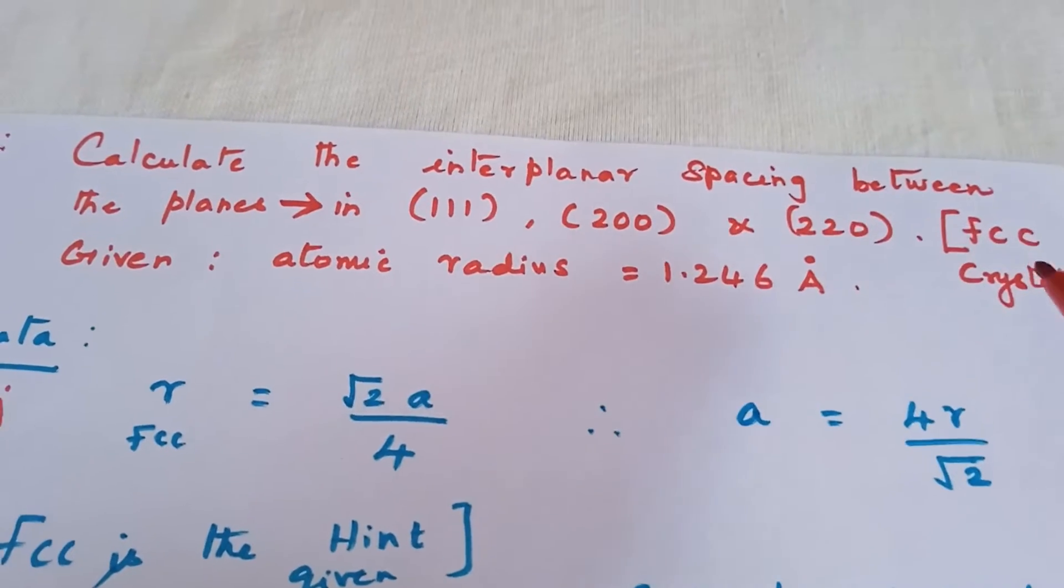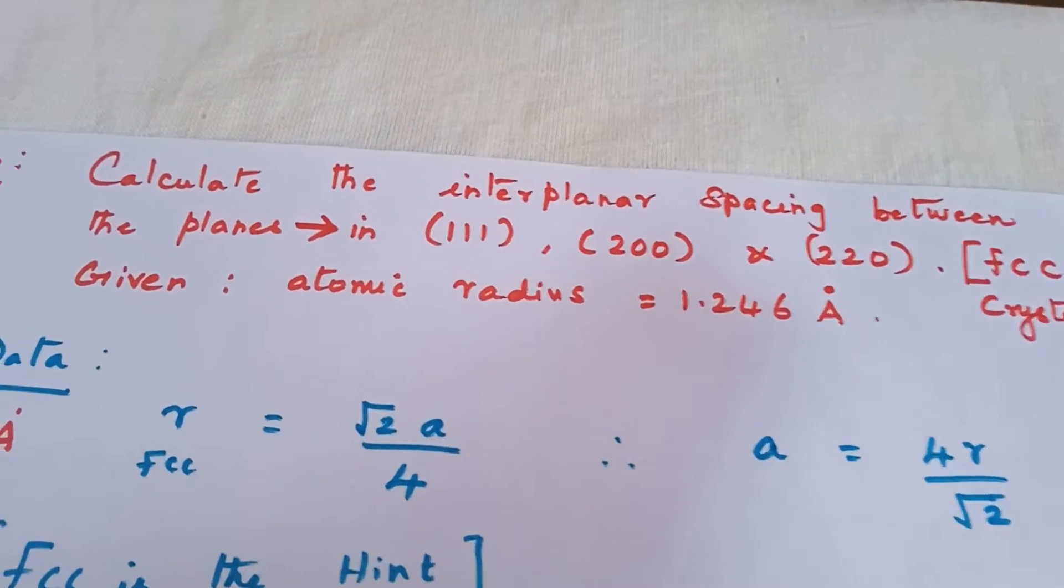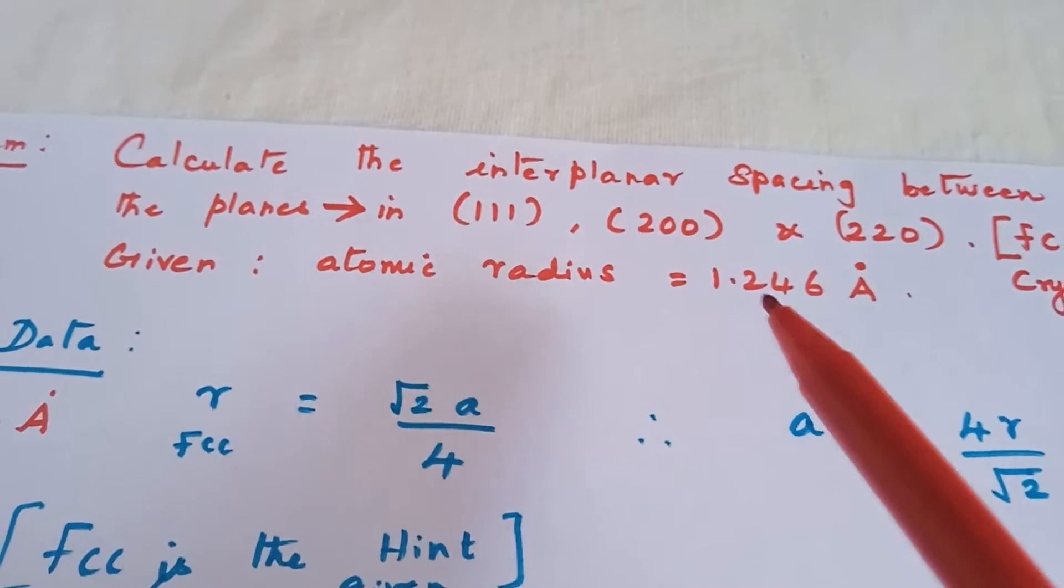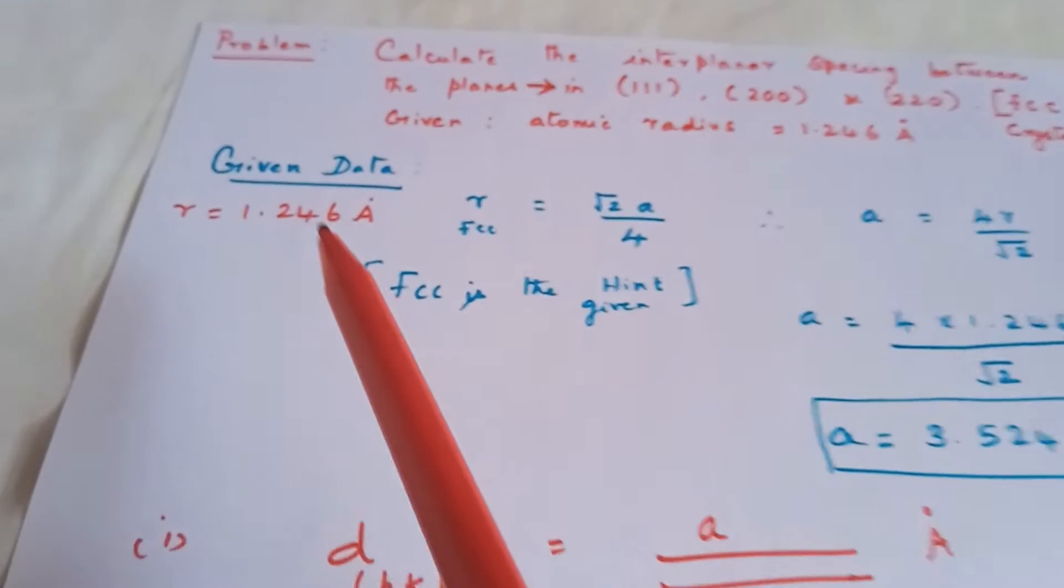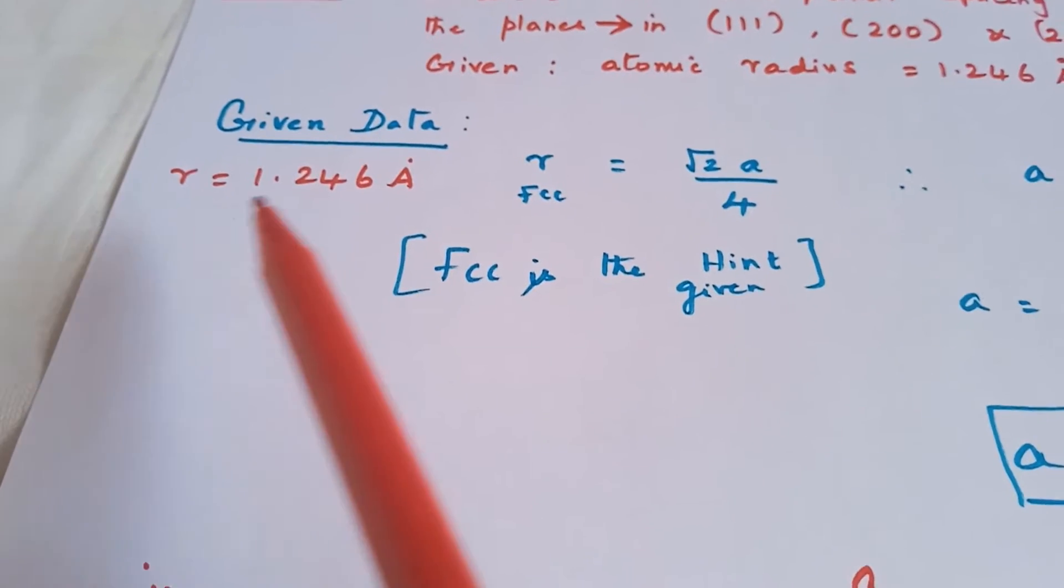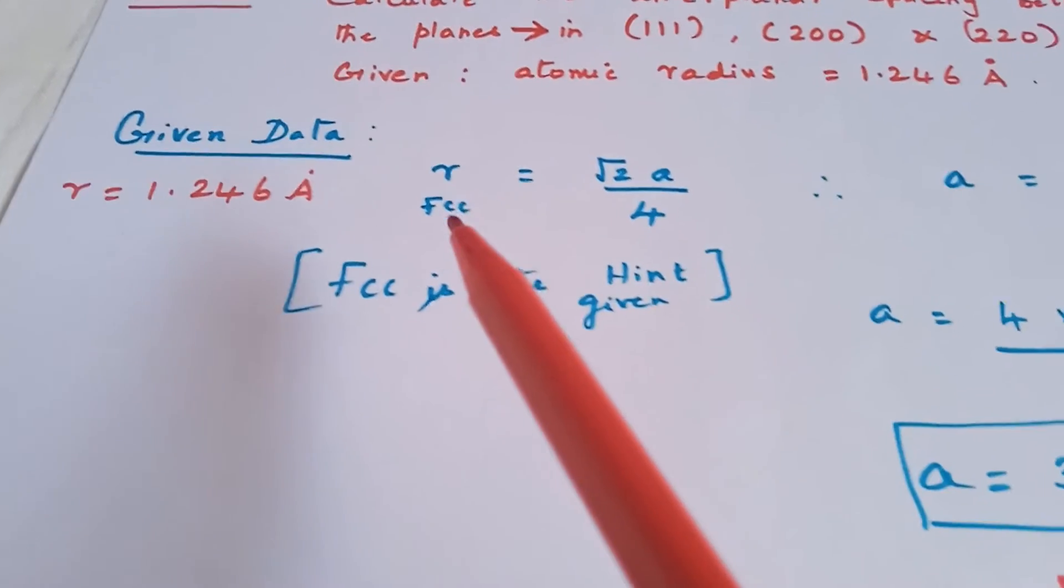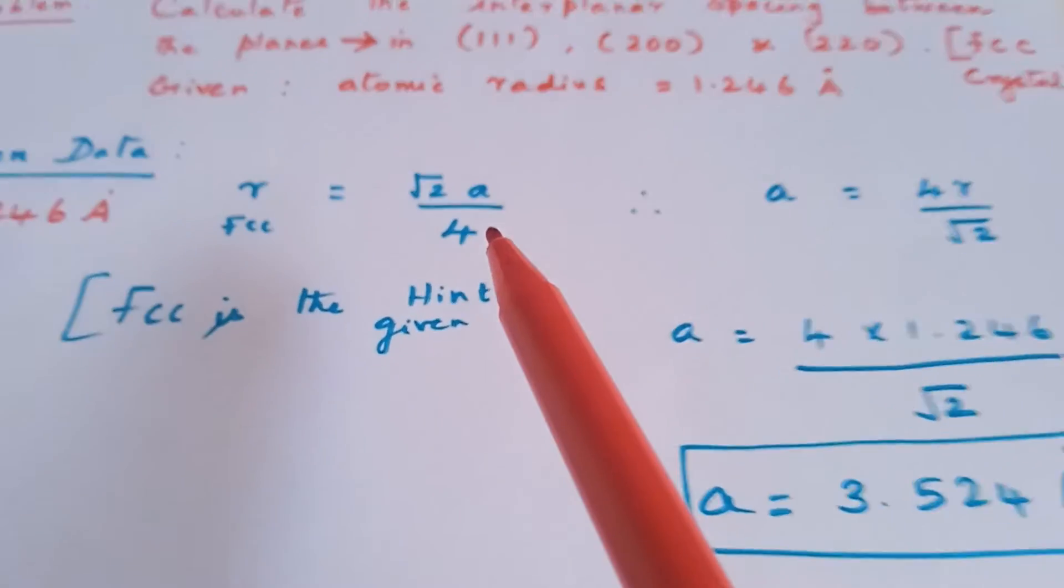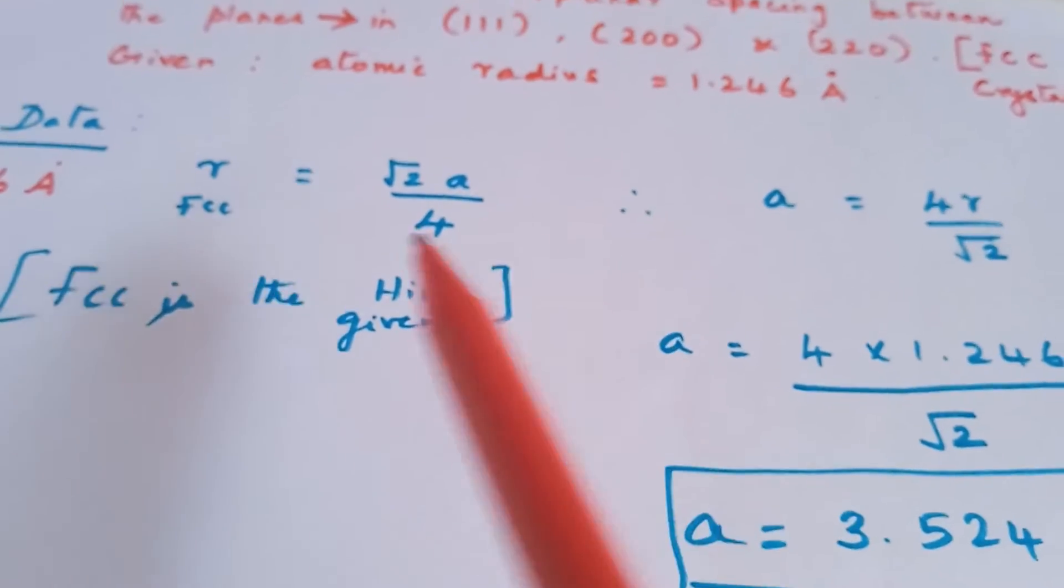The hint is given as FCC crystal structure and the atomic radius value is given as 1.246 angstrom unit. The given data radius of the atom is taken and for FCC the atomic radius value is root 2 a by 4, which can also be solved using a by 2 root 2.